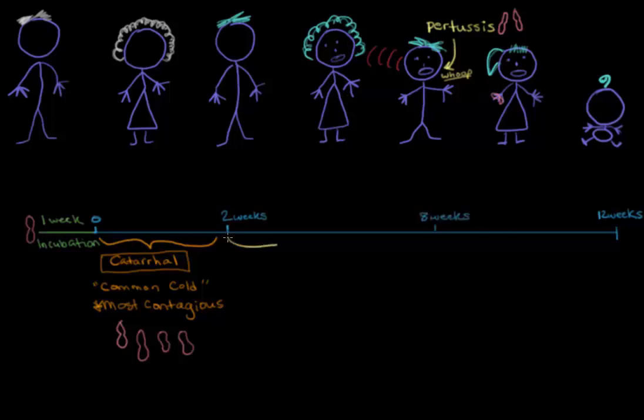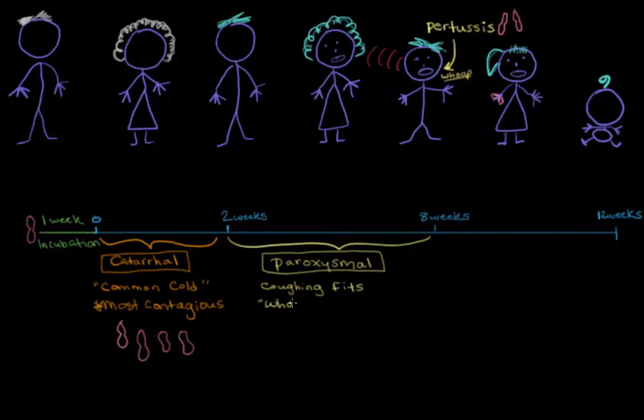During the next two to eight weeks, known as the paroxysmal stage, most of the bacteria is dead so the disease isn't as contagious. But the damage and inflammation caused by the bacteria in the weeks leading up till now can cause extreme coughing fits and whooping noises like we talked about earlier. And actually that's exactly how this stage gets its name. A paroxysm is a fit or a reoccurrence of a symptom. Here it's coughing.